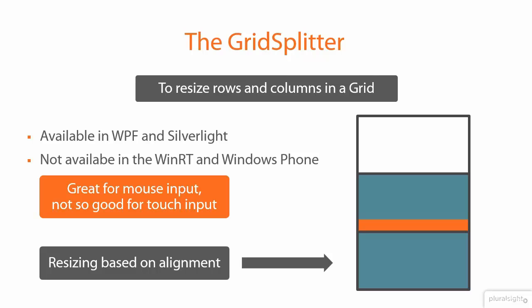The open question is: when does the GridSplitter resize rows and when does it resize columns? The answer is quite simple. When the GridSplitter is wider than high, it will resize rows. When the GridSplitter is higher than wide, it will resize columns.